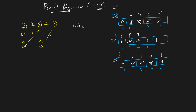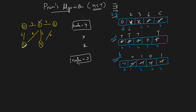Next, iterate the key array again — node 4 is the minimal with value 5. We mark it as true in MST. Its adjacent nodes are 1 and 2, both already in MST, so nothing to update. Then we move to the next minimal — node 3 — and mark it as part of the MST. Its adjacent nodes are 0 and 1, both already in MST, so we don't consider them.